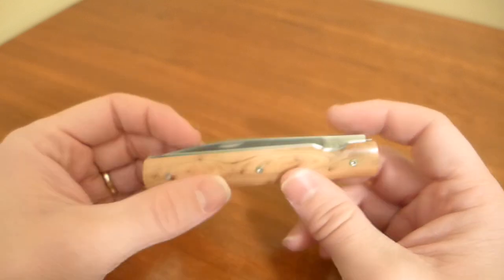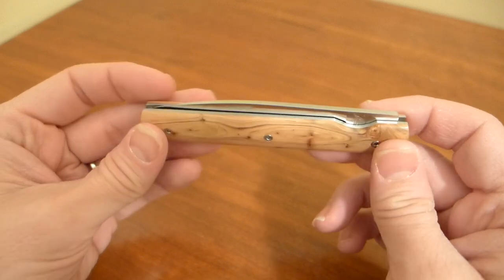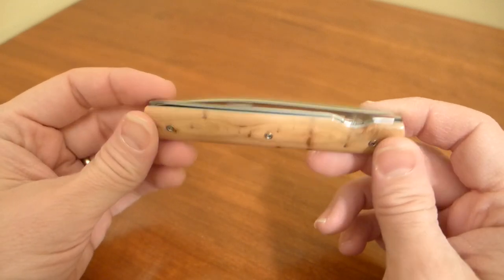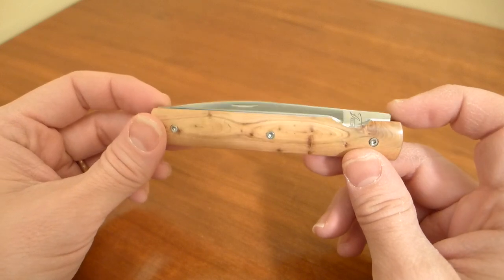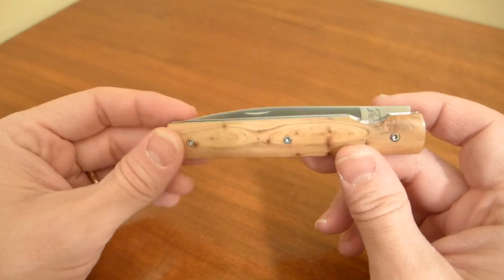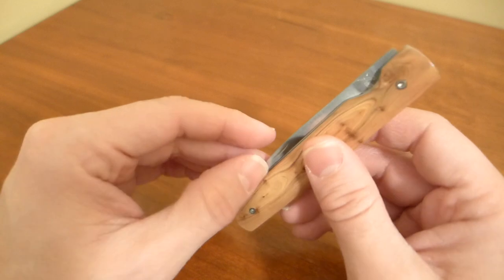They make it in a bunch of different scales. You can get it super expensive, in ivory or tortoise shell. The juniper wood was the cheapest one, and I wanted to buy this because I wasn't sure if I was going to like this knife at all.